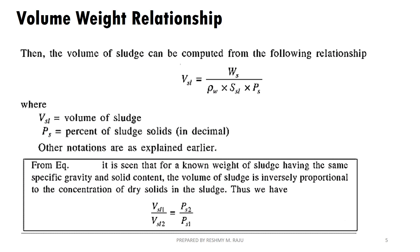Now let's look at the volume of sludge. V_SL equals W_S divided by rho_W into S_SL into P_S. This equation is very important. Here V_SL is the volume of sludge, and P_S is the percent of sludge solids in decimal. We have modified the same equation, noting that the weight of sludge relates to the specific gravity of solid content. The volume of sludge is always inversely proportional to the concentration of dry solids in the sludge.